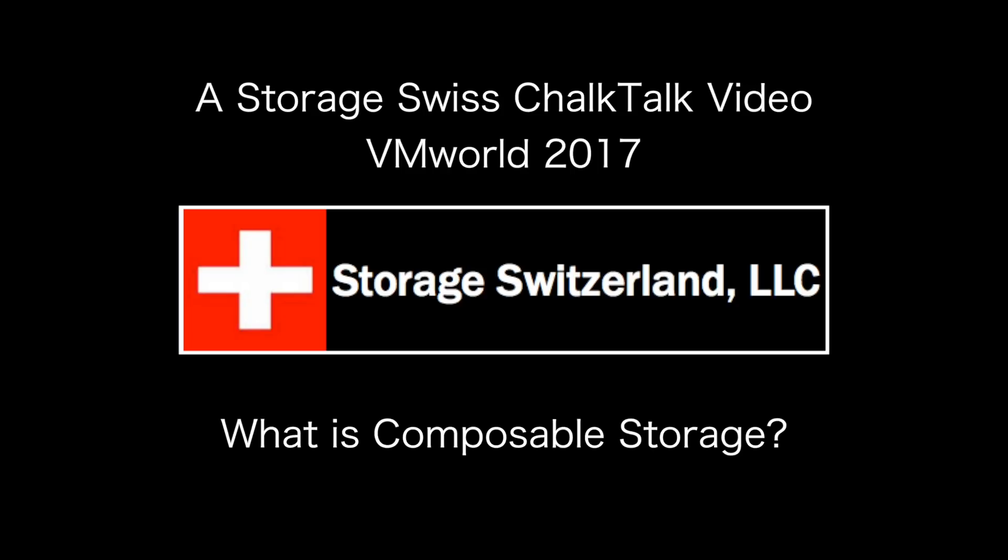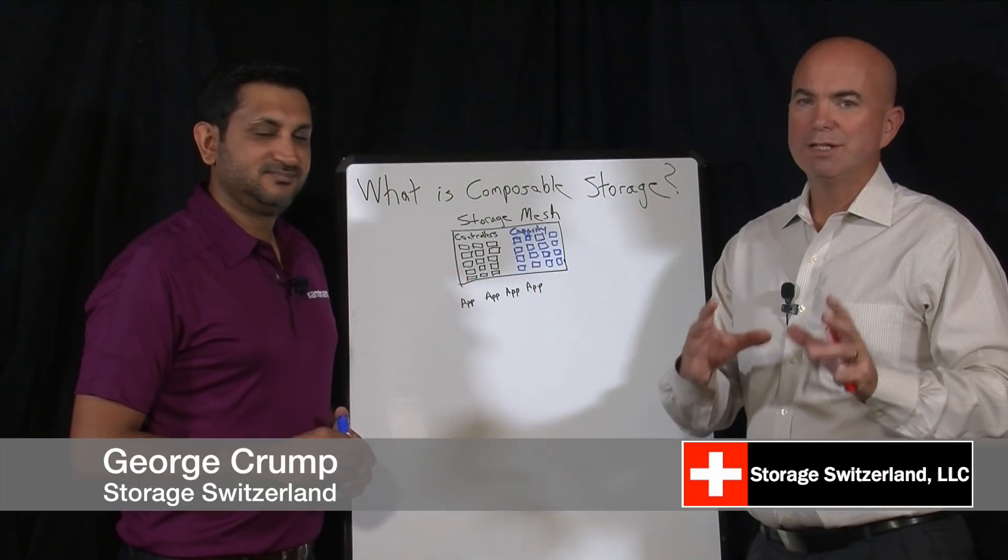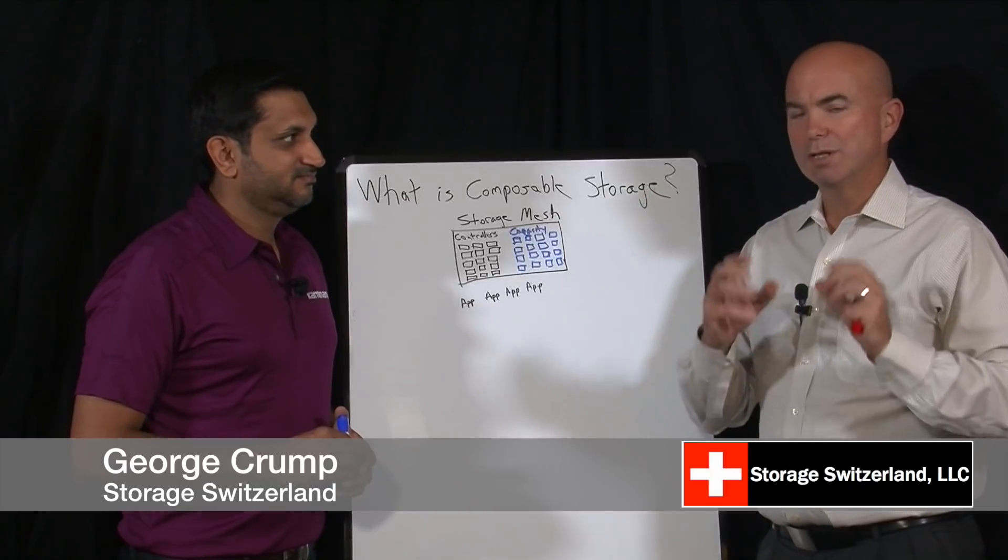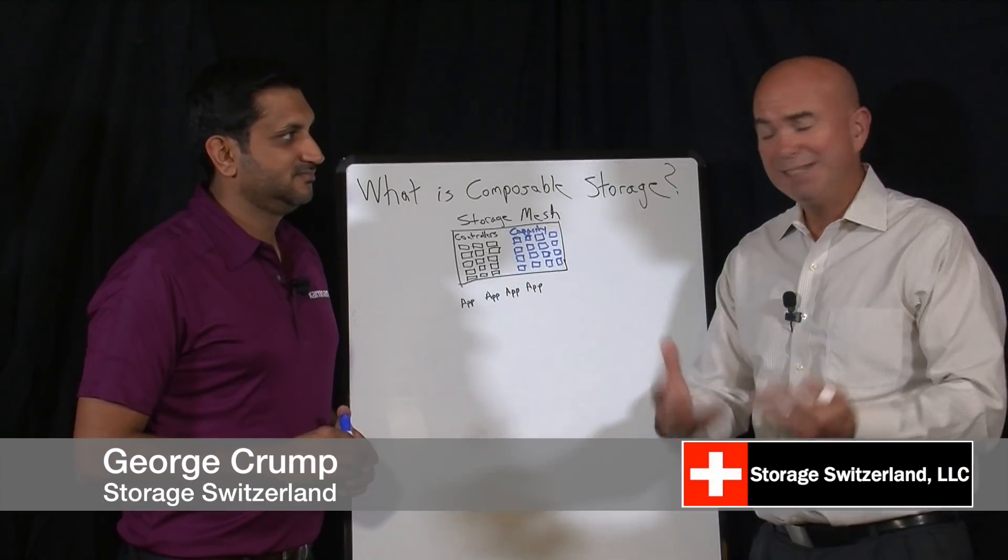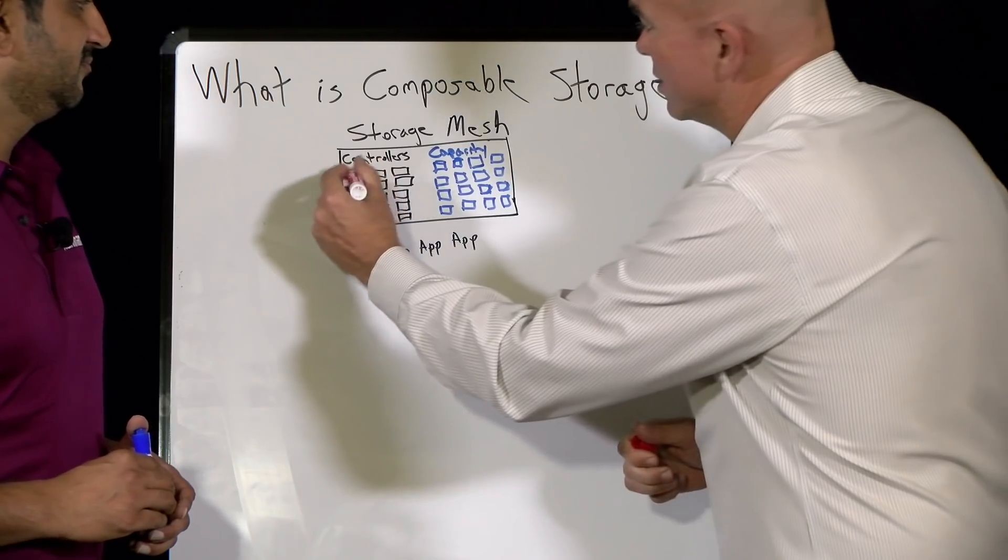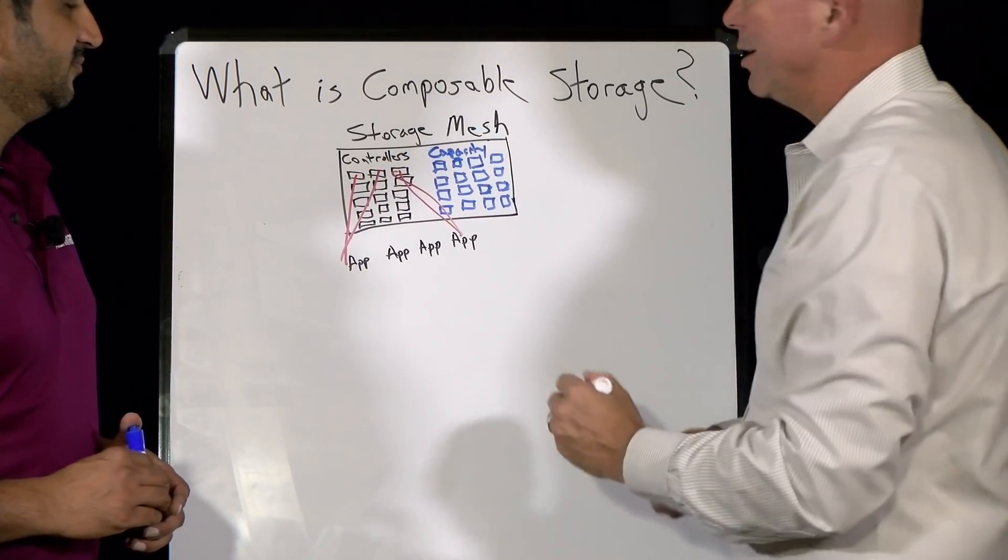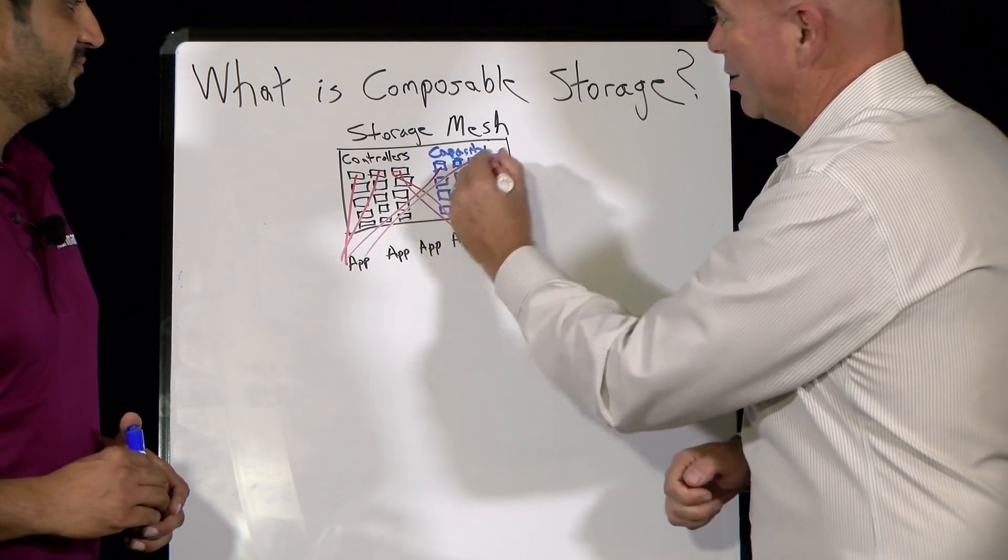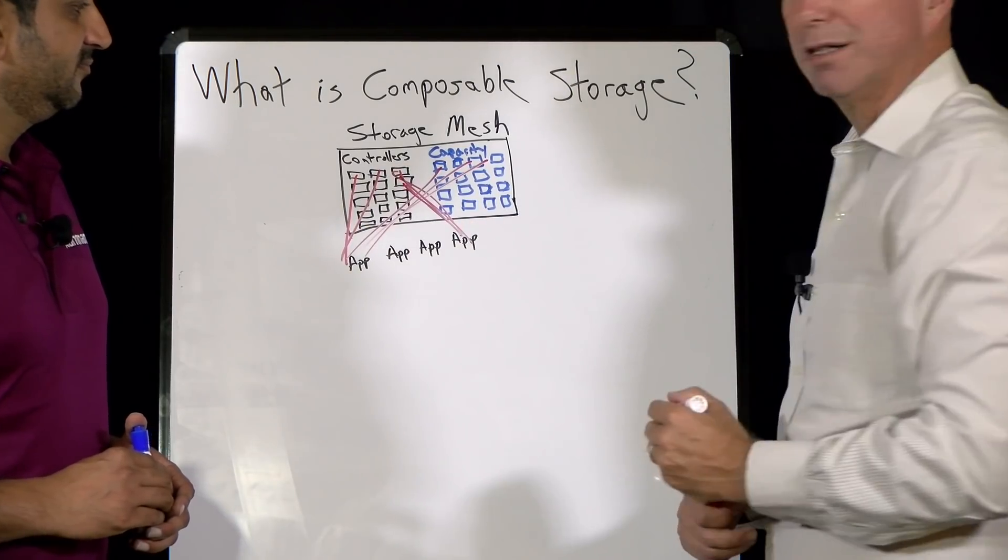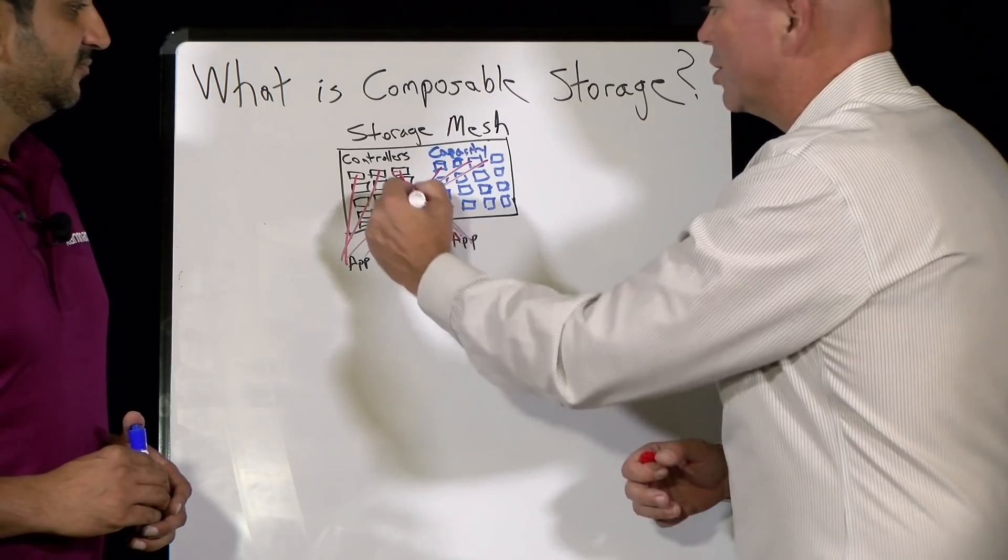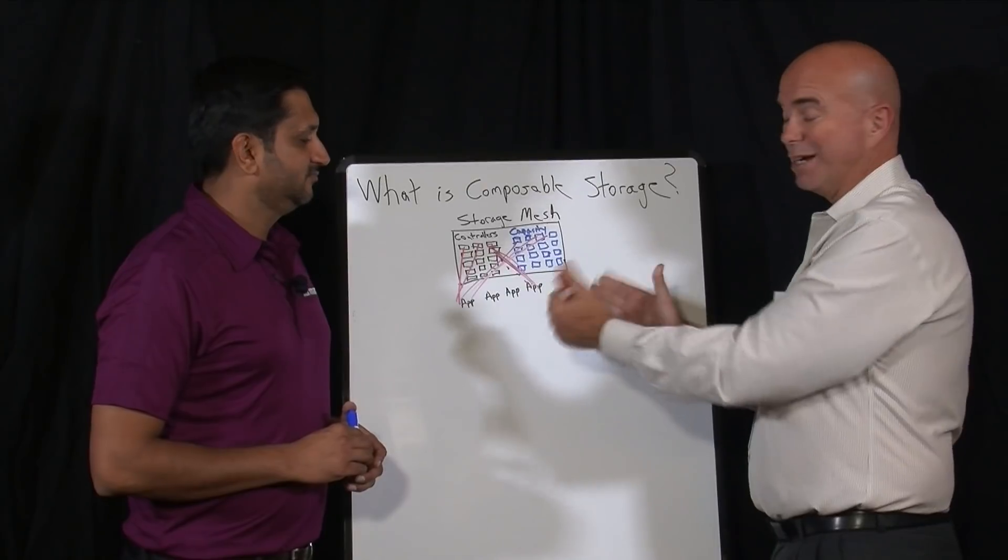As storage systems start to scale and data centers start to scale, we start to look for ways to really guarantee quality of service and performance to critical applications. There's a lot of ways that vendors have tried to solve that, but ideally what you'd want is the ability to assign controllers on the fly to an application and then capacity on the fly to an application. You could just assign more controller power to it and then release it when done. The challenge though is that's not where we are today.